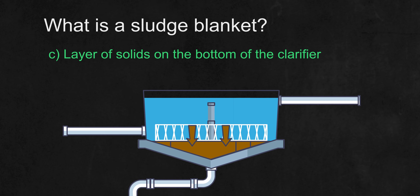The answer is C — it is the layer of solids on the bottom of the clarifier. This is straightforward. Solids that settle within a clarifier make up the sludge blanket. Generally, a good sludge blanket height is 1 to 2 feet.